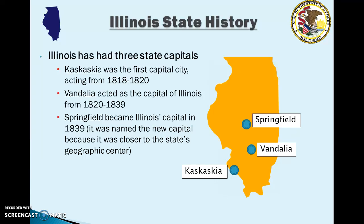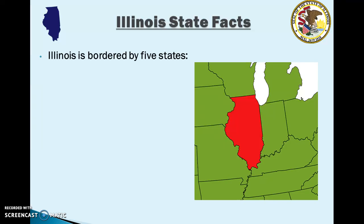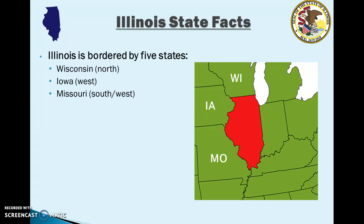Illinois is bordered by five states. In counterclockwise order: Wisconsin, which is north of Illinois; Iowa, which is to the west; Missouri, which borders Illinois to the south and west; Kentucky, which borders Illinois to the south and east; and finally Indiana. Those are the five states that border Illinois.